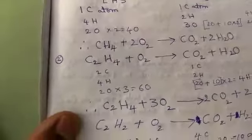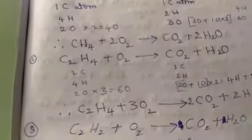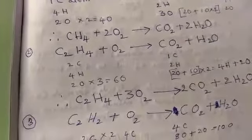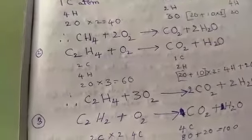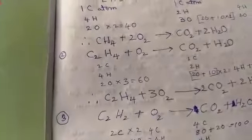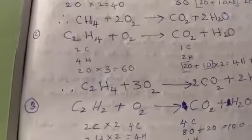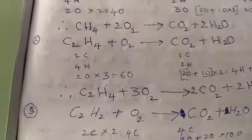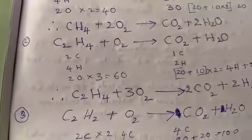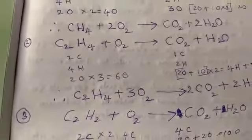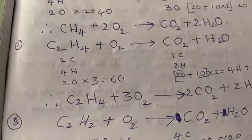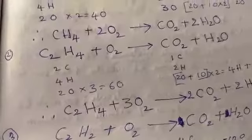Next, C2H4 plus O2 gives CO2 plus H2O. On the left-hand side, two C. On the right-hand side, one C. On the left-hand side, four H, four hydrogen atoms. On the right-hand side, only two hydrogen atoms. On the left-hand side, two oxygen atoms. On the right-hand side, three oxygen atoms.